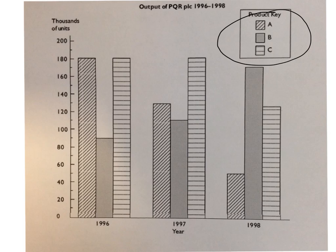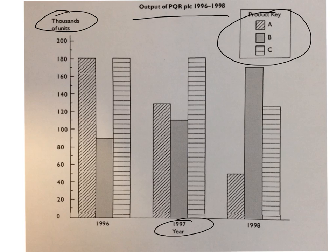We've given it a title — this is always very important. People worry about the title, but in general, what's it about? We've labelled our axes, so it's thousands of units, and this is years along the bottom.